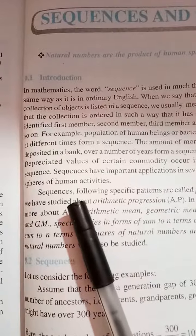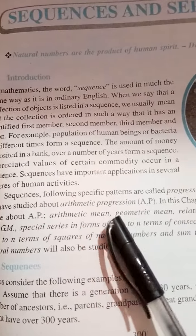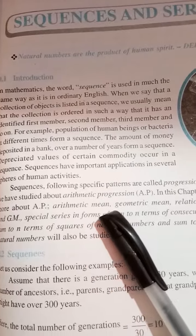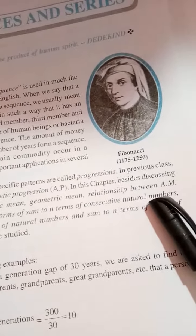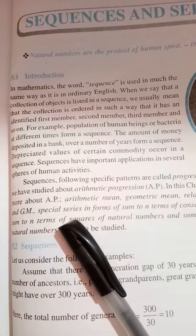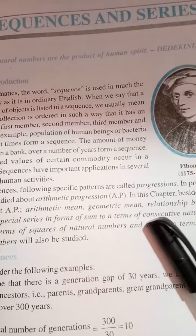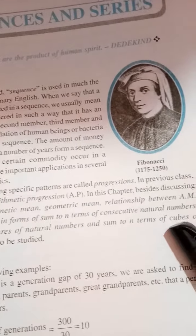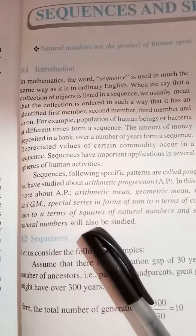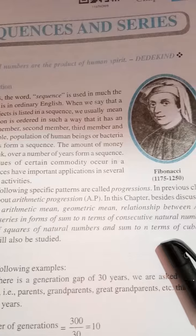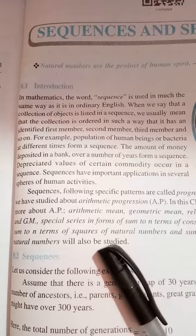In the previous class we have studied about arithmetic progression, i.e., AP. In this chapter, besides discussing more about AP, arithmetic mean, geometric mean, and the relationship between AM and GM, special series — the sum of n terms of consecutive natural numbers, sum of n terms of squares of natural numbers, and sum of n terms of cubes of natural numbers — will also be studied.